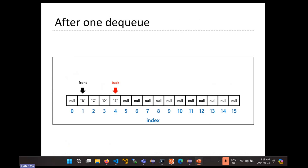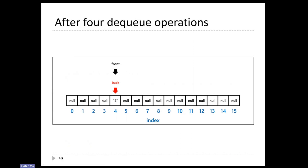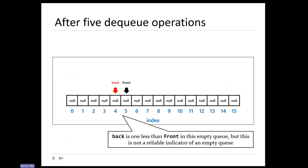Continuing to dequeue: remember the front element, move front one position right, null out that element, decrease size by one, return the element to the caller. Eventually front and back end up side by side — front is one position to the right of back — which looks like the original empty queue situation. You might think you don't need to track size separately and could compute it from front and back, but it turns out that's not necessarily the case. There is a situation where front and back look like this and the queue is in fact not empty. We'll look at that in the next lecture since we're out of time.